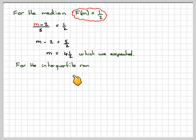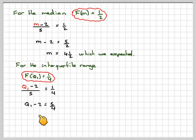For the interquartile range, Q1, the lower quartile, F(Q1) is 1 quarter. So Q1 minus 2 over 5 is equal to a quarter. Q1 minus 2 is 5 over 4. So Q1 will be 3 and 1 quarter.